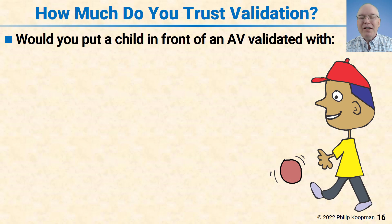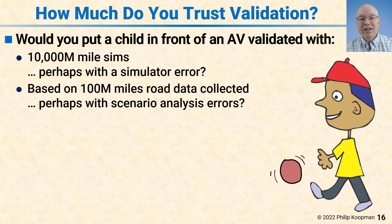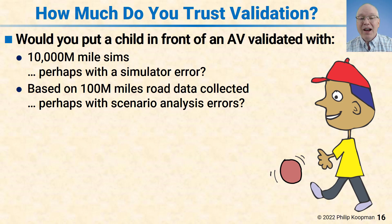The argument is going to be: well, we did a lot of simulation, we did a lot of testing. But the counter-argument is something like this. Yes, you did 10 billion miles of simulation — that's awesome — but was there a simulator error? How do you know there's no simulation error? And you did 100 million miles of road data collected to feed into the simulation, but maybe there's a once-in-every-200-million-miles scenario that leads to a fatal crash that you never saw and so you didn't put it in the simulation. Maybe there's a lot of things like that. So how do you know that you caught all the scenarios and all the objects?